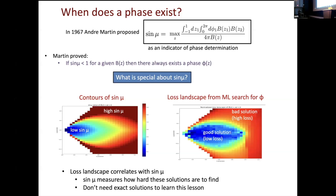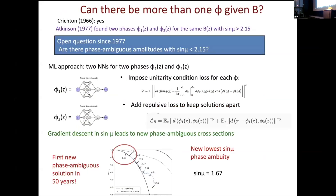We found some other results: by parameterizing two different phases as neural networks with a repulsive loss to ensure they differ, we can search for new solutions. In 1977, the best phase-ambiguous solution — meaning the same amplitude with two different phases — had sine mu of 2.15, and we found solutions with lower sine mu. There's an open question whether you can get down to one. We're just demonstrating the principle that machine learning is useful for these symbolic problems.